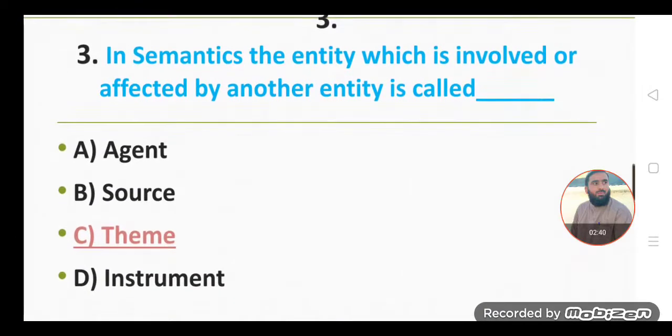Another very important MCQ is there. In semantics, the entity which is involved or affected by another entity is called agent, source, or theme. Yes, the entity which is affected by another entity, by an agent we can say, is called theme.